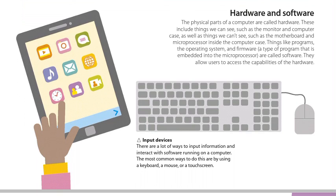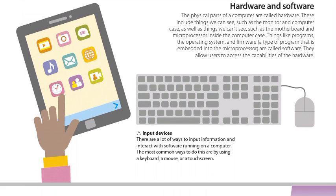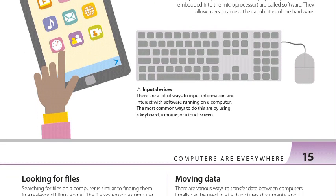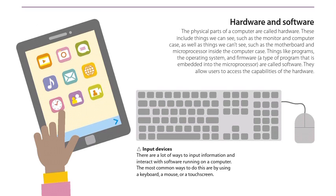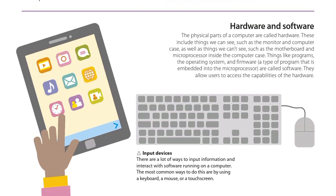Things like programs, the operating system, and firmware — a type of program that is embedded into the microprocessor — are called software. Software allows users to access the capabilities of the hardware.